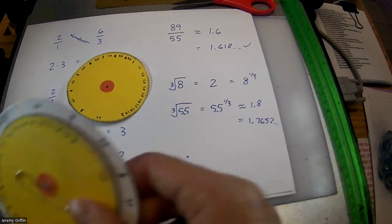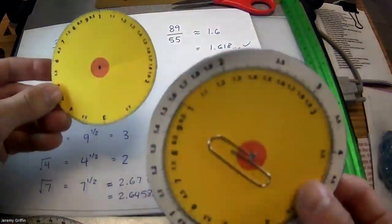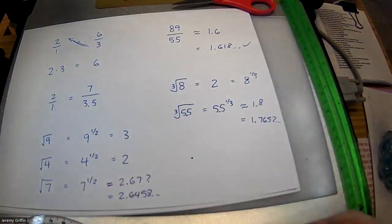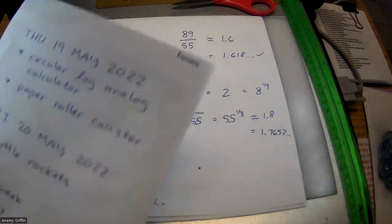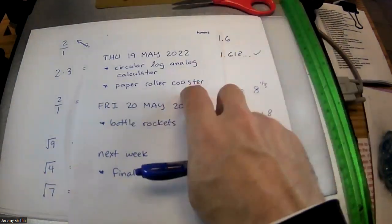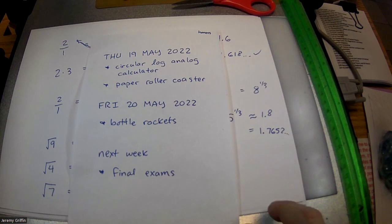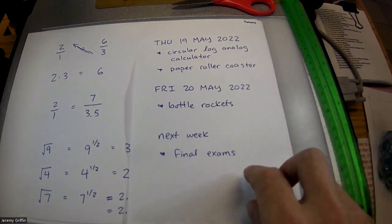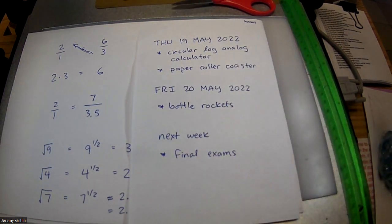So that's how you use an analog calculator to multiply, divide, and take roots — no batteries needed. You guys have the rest of the class period to work on your paper roller coasters and anything else you need to make up or study. Tomorrow the plan is to take you outside and blast off the bottle rockets.